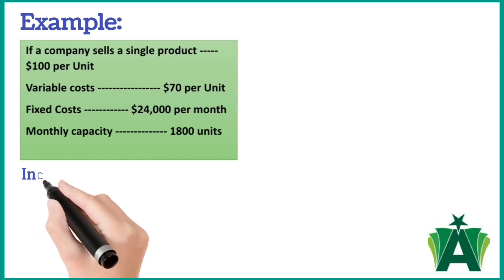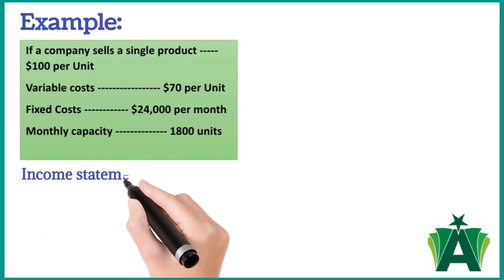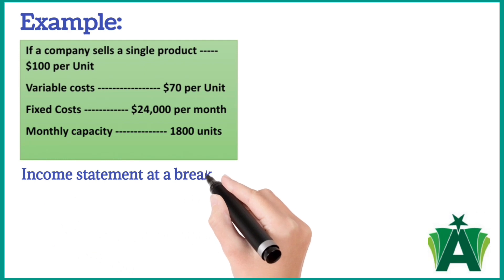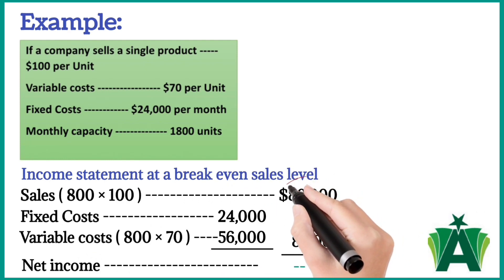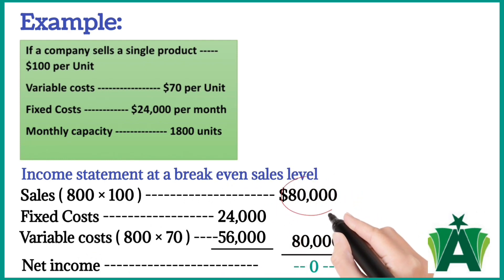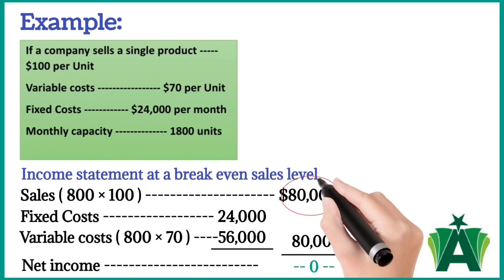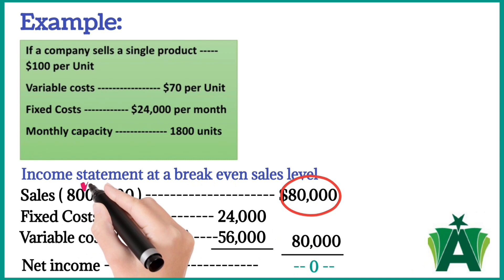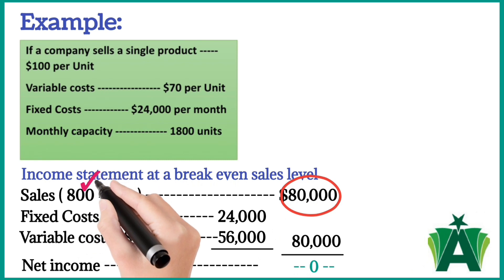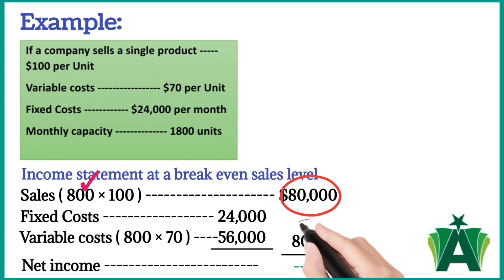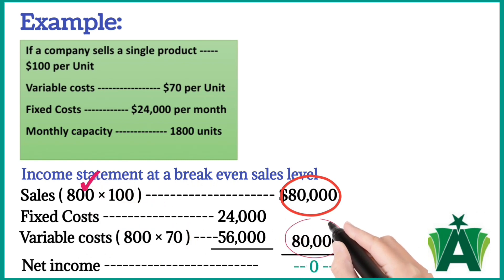The income statement at a break-even sales level shows that the $80,000 revenue from sales of 800 units exactly equals the sum of the fixed and variable costs.